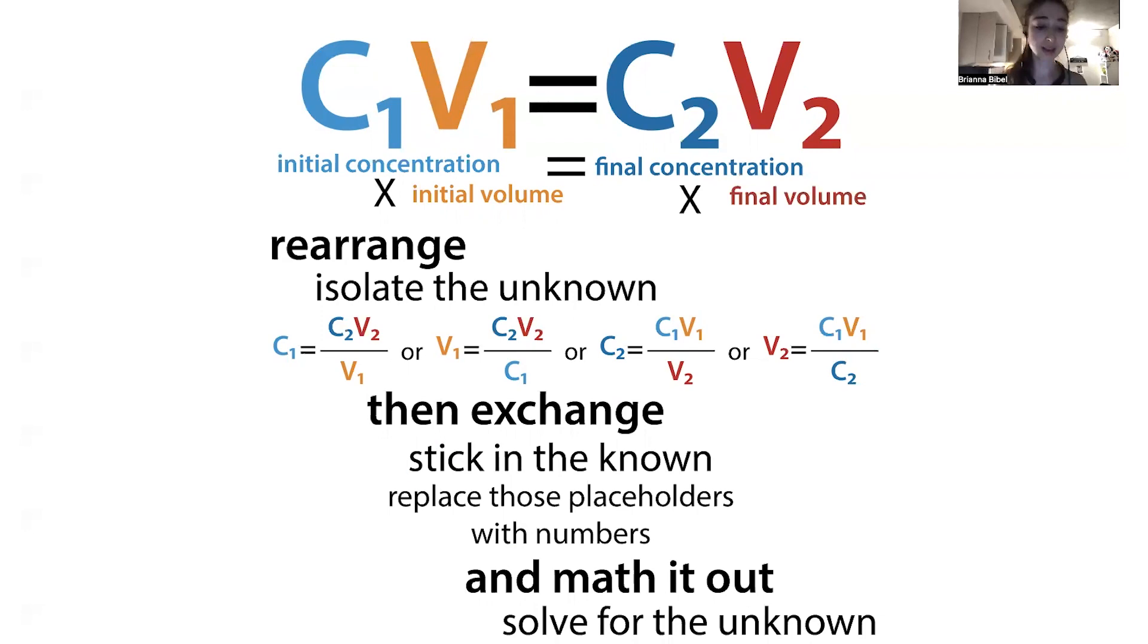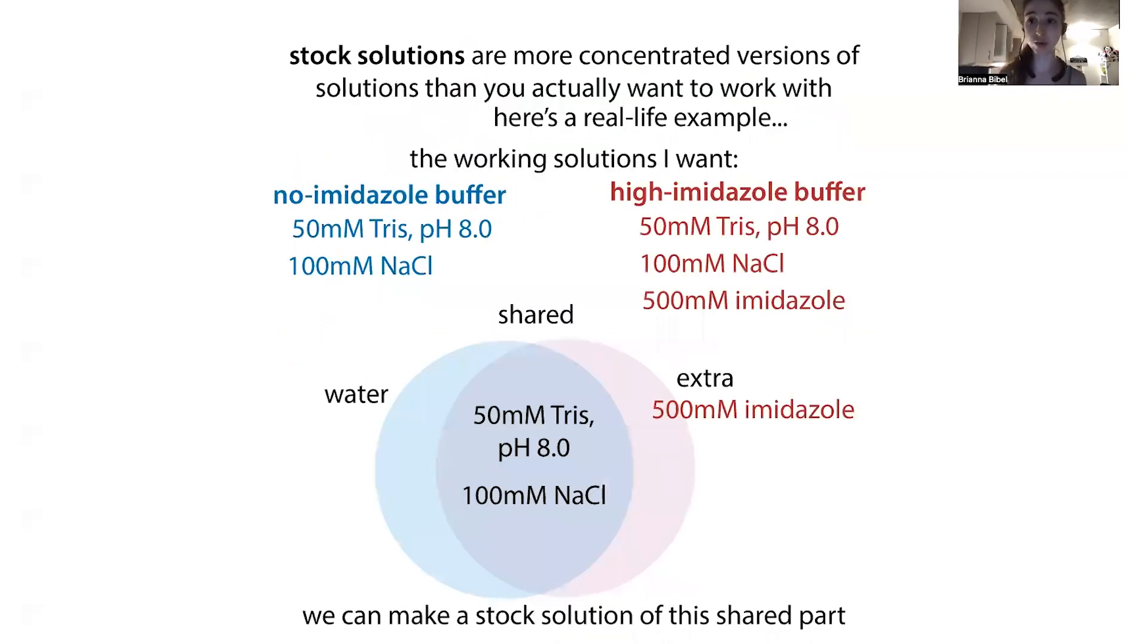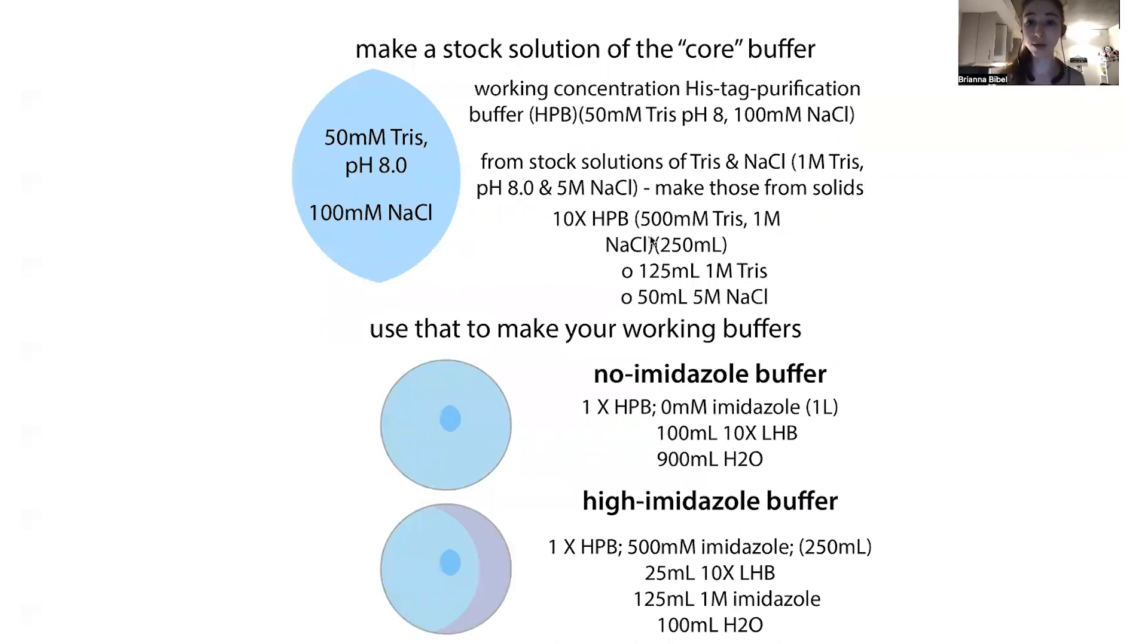By stock solution, basically that's just a more concentrated version of the solution that you actually want to work with. Say you might want to make a solution of Tris buffer at one molar and sodium chloride, or you might want to keep Tris at one molar and make a stock solution of sodium chloride at five molar. In biochemistry we make these higher concentration solutions and then dilute them down to our final working concentration. By starting with these original stocks, we can have less liquid filling up all our shelves, and it also allows us to inhibit bacterial growth. Importantly, it allows us to mix different solutions and then we have extra room to add in what else we want.